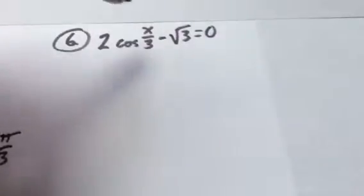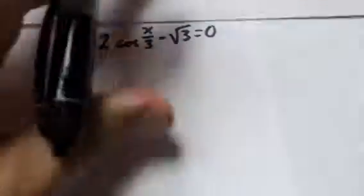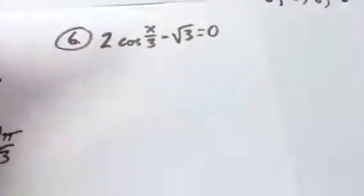We're supposed to solve this. One thing I notice is that I have this x over 3. And solving this, it's bounded. I'm given a bound, 0 to 2π. So none of my answers should really be larger than 360, larger than 2π.